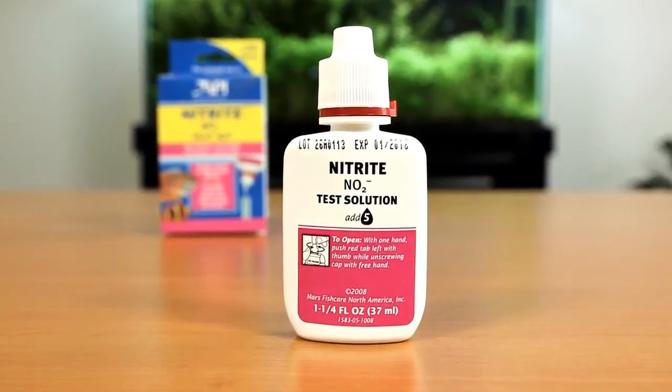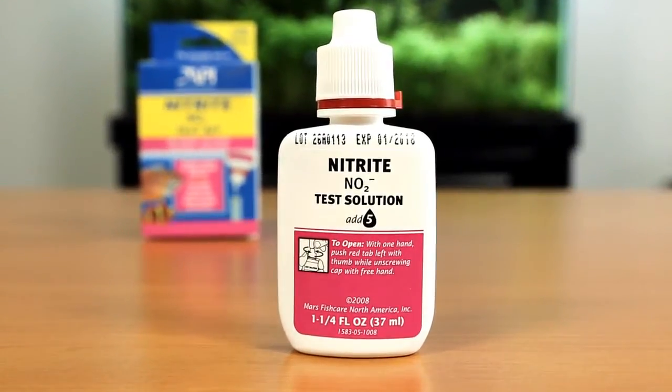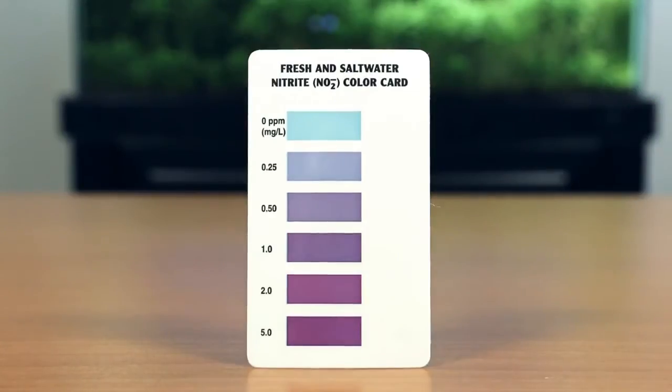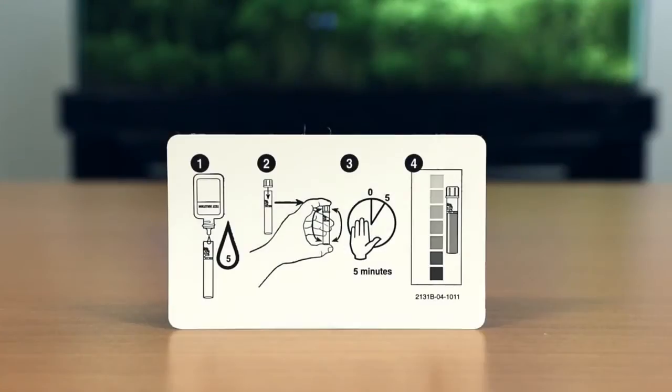The API Nitrite Test Kit uses just one bottle of test solution. The nitrite color card is calibrated for both fresh and saltwater. Testing instructions can be found in the manual and on the back of the color card.